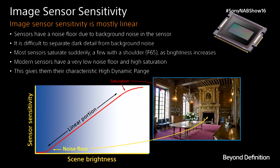The sensors of the electronic cameras — I'm illustrating the sensor in our F65 cinematographic camera, which is an 8K sensor with extremely low noise. Notice that the sensor captures light linearly: it simply stops at the noise floor and has a saturation or shoulder at the extreme levels of brightness. The important point is that it is a linear capture of light.